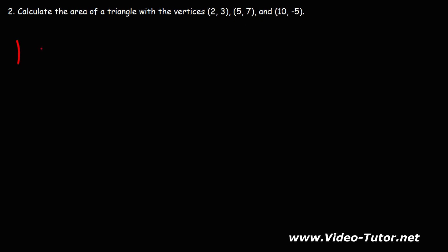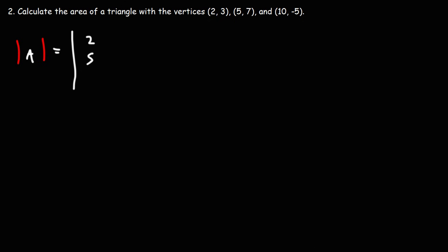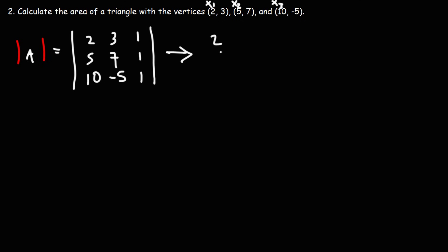Let's calculate the determinant of matrix A for a second example. In the first column we have the x values 2, 5, and 10. The y values will be 3, 7, and negative 5. The last column is just 1, 1, and 1. Now let's expand it: we write the first column 2, 5, 10 and then the second column 3, 7, negative 5 and then the third column, then the first column again and the second column.